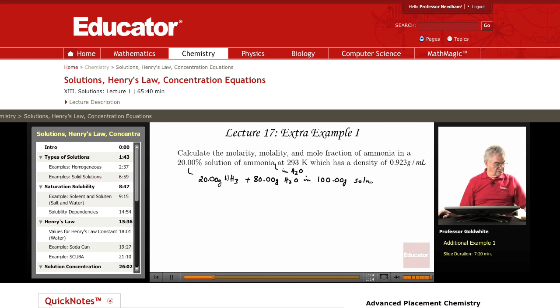Let's do each calculation individually. Part A: molarity is the number of moles of solute divided by the number of liters of solution. That equals, well the number of moles of solute is easy enough, 20.00 grams of ammonia divided by 17.03 grams per mole of ammonia.